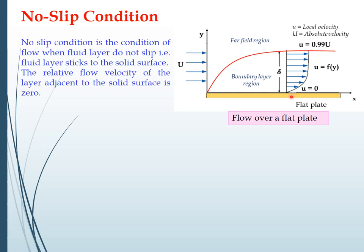The layer which will be near to the wall will have to face the maximum resistance. If the resistance is maximum then the velocity will be minimum for a layer near to the wall. This layer which is in contact with the surface will be in a condition of no slip — it will try to adhere or stick with the flat plate. This layer will have velocity nearly equal to zero. This condition is called the no-slip condition when the fluid layer tries to stick with the solid surface. The relative velocity of the layer adjacent to the solid surface is zero.